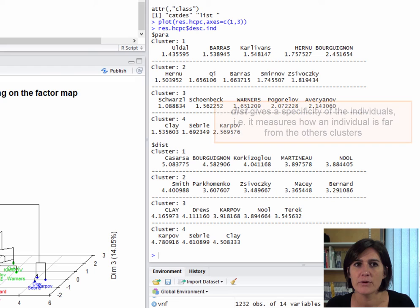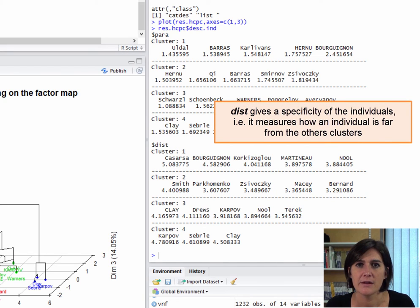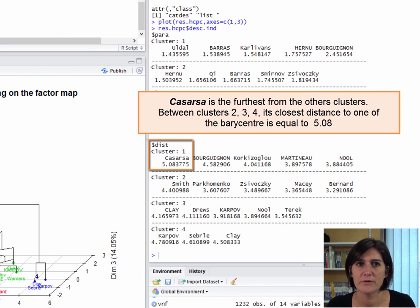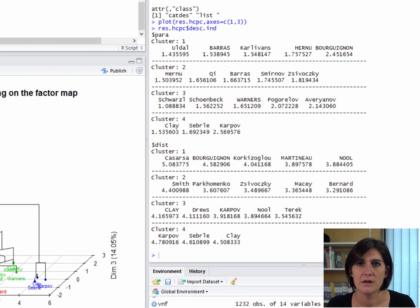There is a second measure that comes from the individuals, which we call the specificity. The results of this are in the dist object. So, what is this exactly? Well, for the dist object, the distance of individuals to the barycenters of the other classes has been calculated. For the class 1 individuals, Kazarsa is the one that is furthest from the other classes, that is the furthest from the barycenters of the other classes. Its distance to the closest other barycenter is 5.08. From this point of view, Kazarsa is very clearly representative of the first class. There is no way it could be in any of the other classes. As for class 2, the most typical individual in this sense is Smith, as they are very far from the barycenters of the other classes.